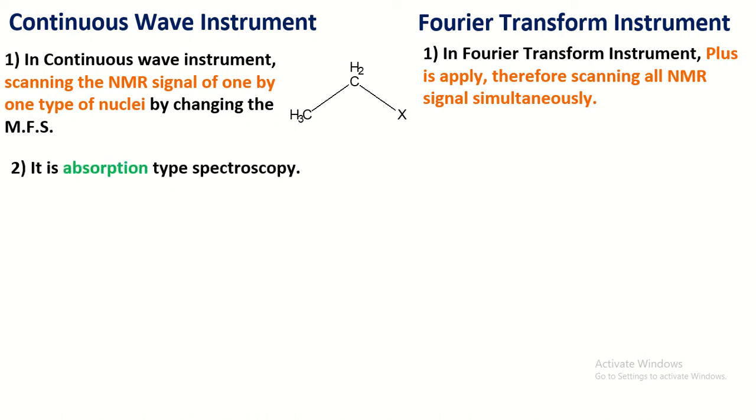Continuous wave instrument gives spectra that is called absorption type spectroscopy. But Fourier transform instrument gives spectra that belongs to emission type spectroscopy.